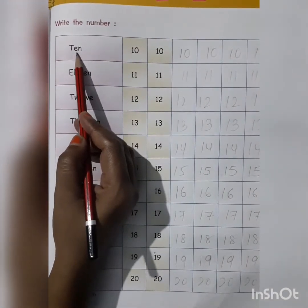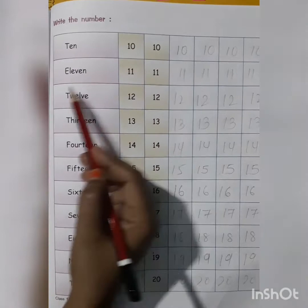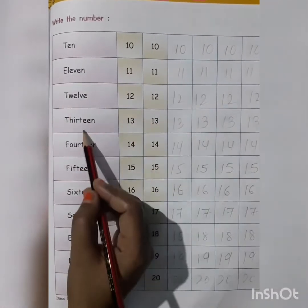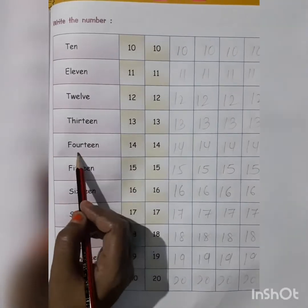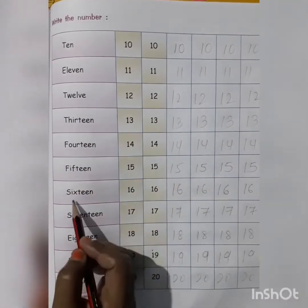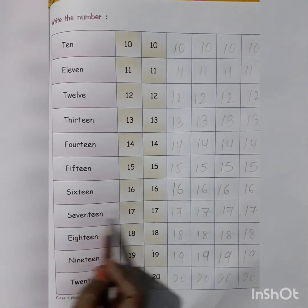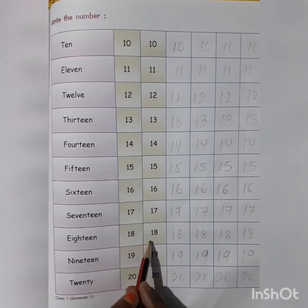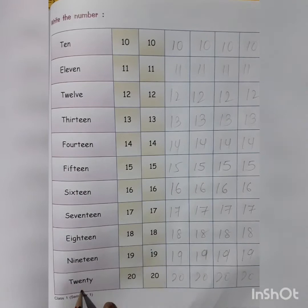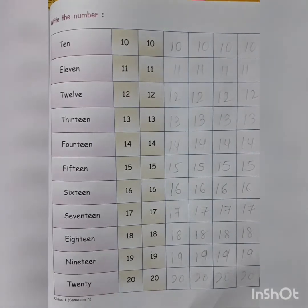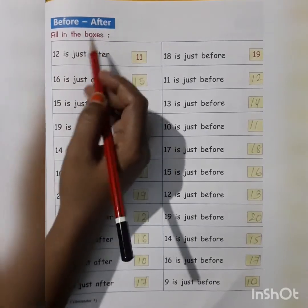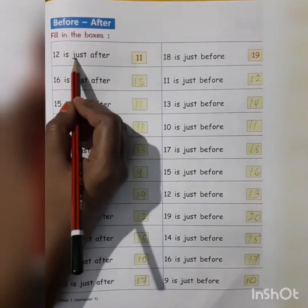Now write the numbers in figure: 10, 11, 12, 13, 14, 15, 16, 17, 18, 19, and 20. Now, before and after — filling the boxes. 12 comes just after 11.